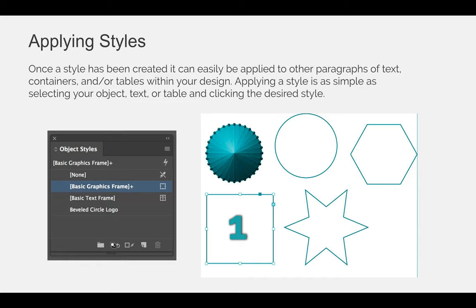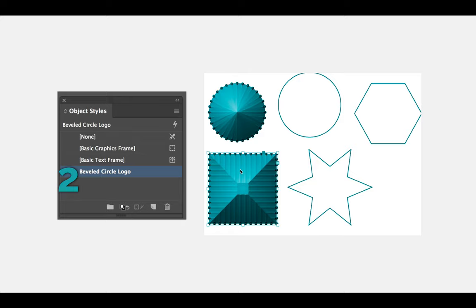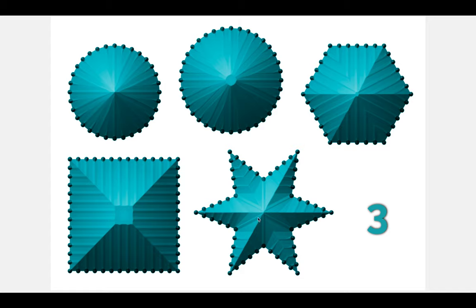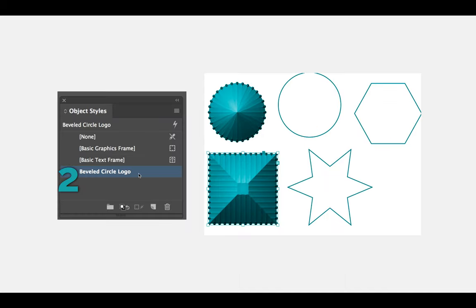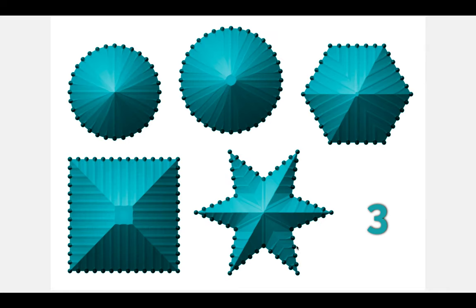Once you create a style you can apply it as many times as you want. Every new frame I created — my hexagon, my star, and my square — is linked to basic graphic frame by default. But I can select any object, click 'beveled circle logo', and those saved attributes are automatically applied to the other shapes. You can see I selected the square, clicked beveled circle logo, and now those settings are linked to the square. Select each object, click the style, and it becomes linked. If I then edit the object style and change the color from bright blue to bright yellow, everything linked to it will change color automatically.